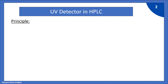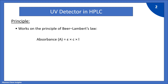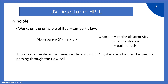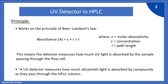Let's first see the principle of UV detector. It works on the principle of Beer-Lambert's law, where absorbance A is equal to Epsilon into C into L, where Epsilon is molar absorptivity, C is concentration, and L is the path length. This means the detector measures how much UV light is absorbed by the sample passing through the flow cell as compounds pass through the HPLC column.